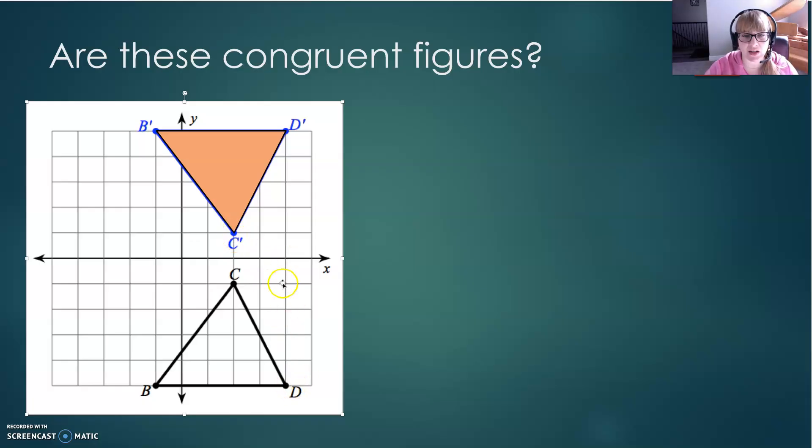D is staring into the mirror reflection one, two, three, four, five away. So its reflection, D' is staring back into the mirror one, two, three, four, five away. Yes, this is a reflection, and so they are congruent figures.